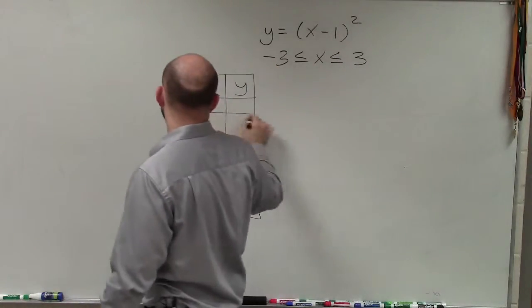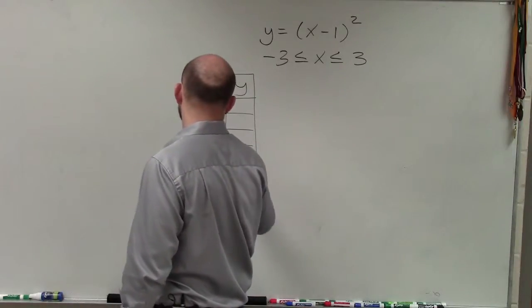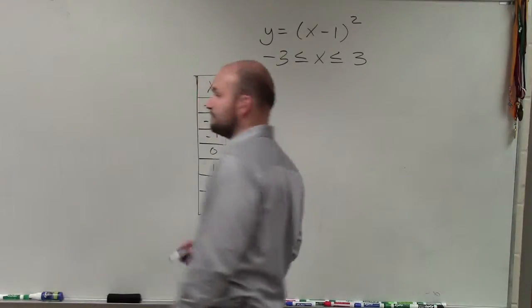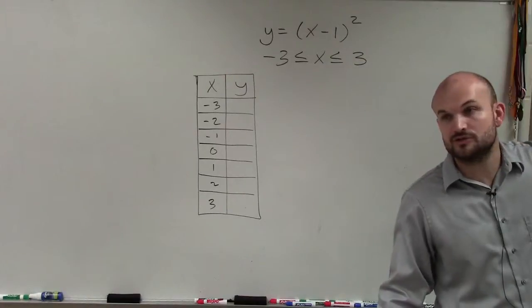So let's just list all those. That would be negative 3, negative 2, negative 1, 0, 1, 2, 3. So for your table of values over here, you're going to choose all of these points.